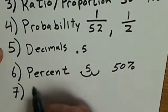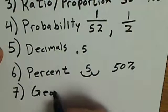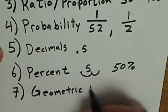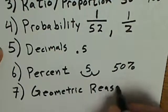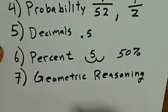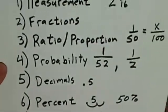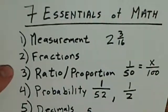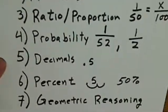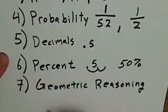And then number seven is geometric reasoning. A lot of reasoning, a lot of geometry is using these six fundamentals up above. Measurement, fractions, ratio, proportion, probability, decimals, percent. And then finally geometric reasoning.